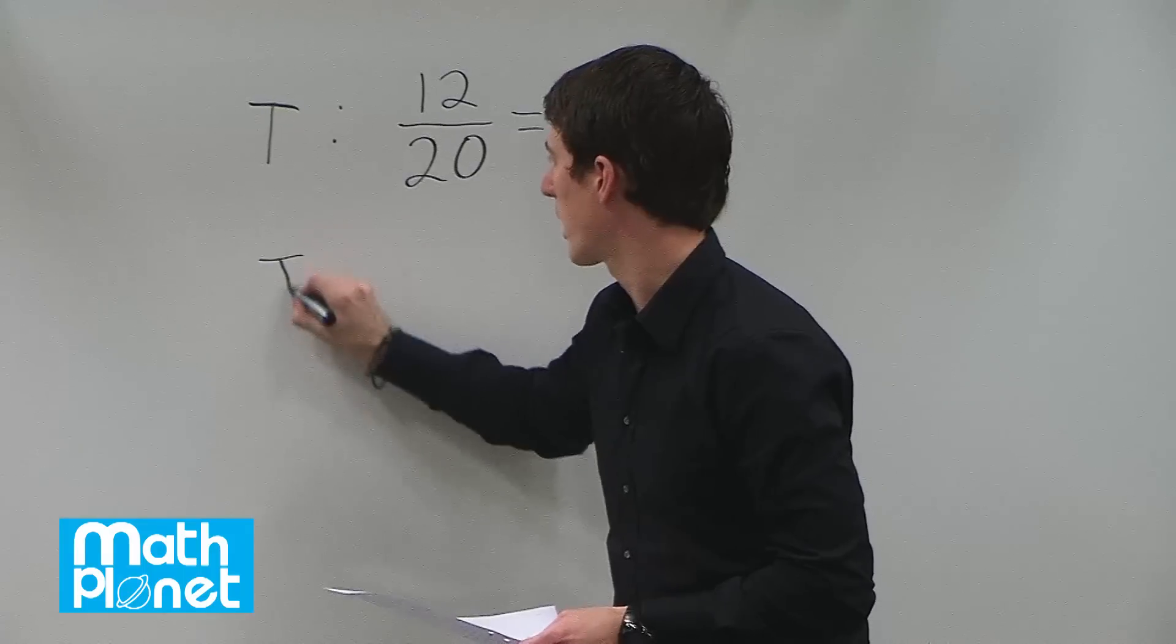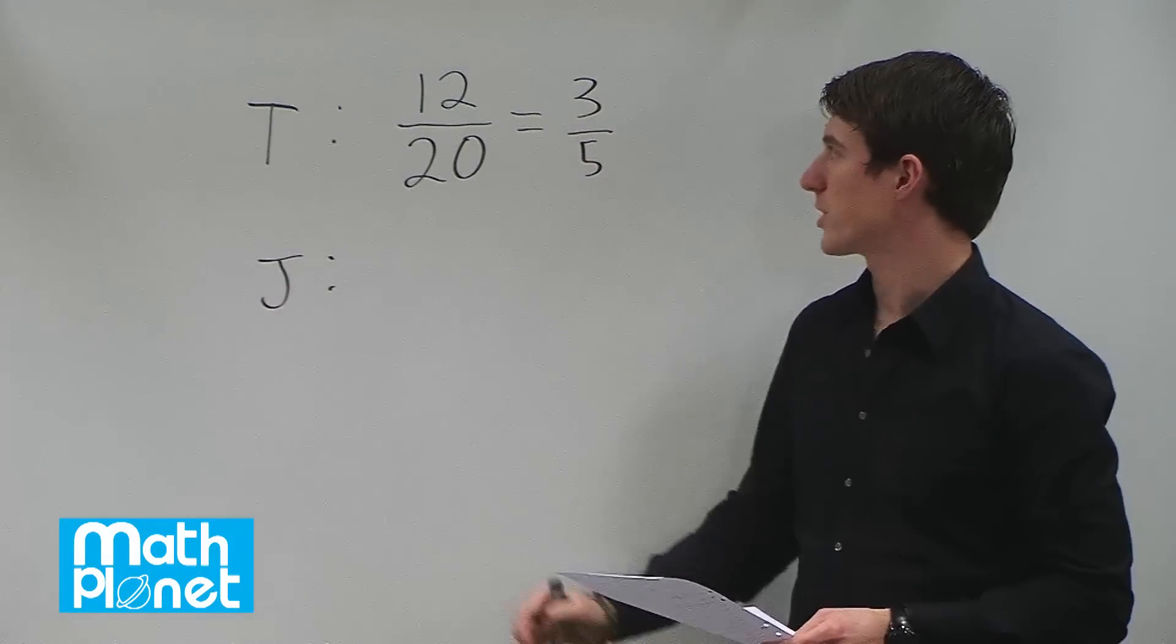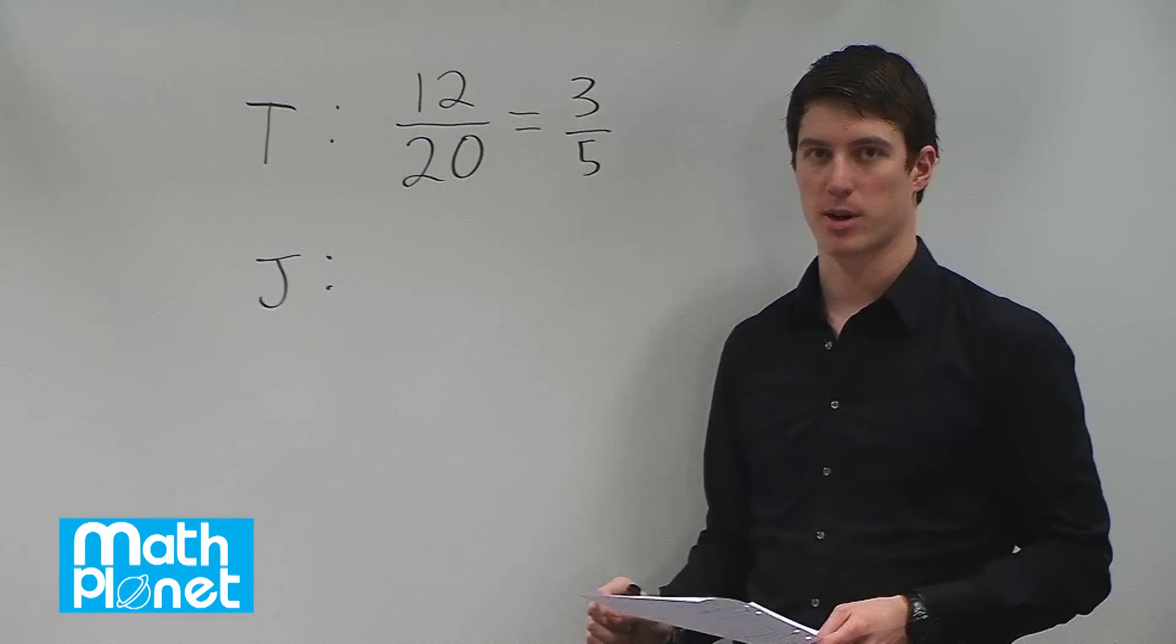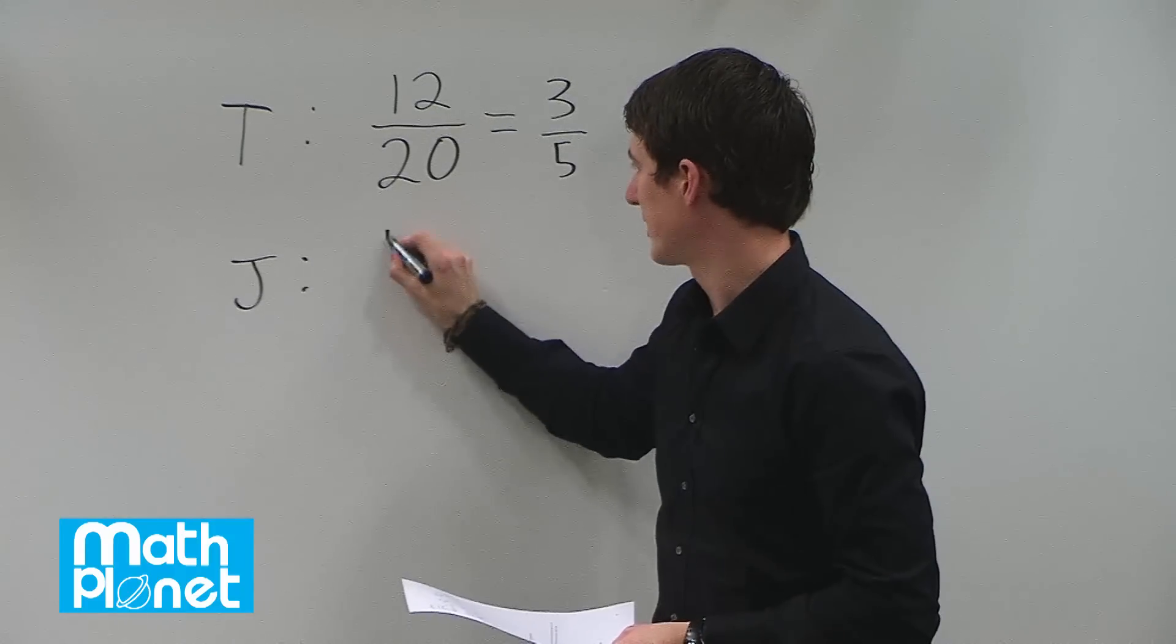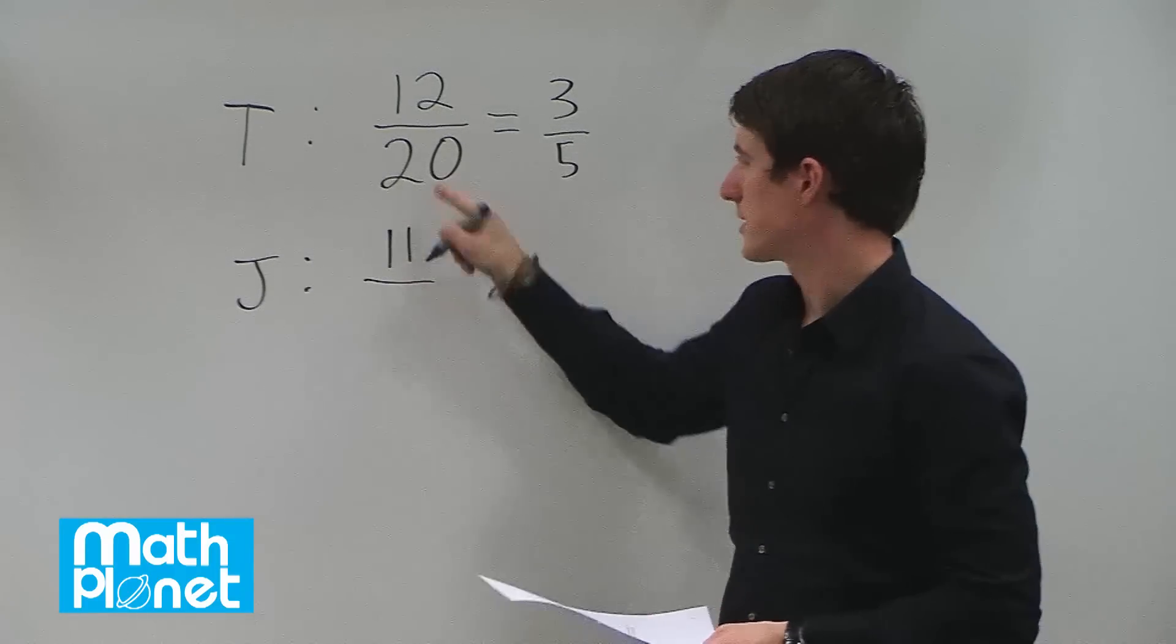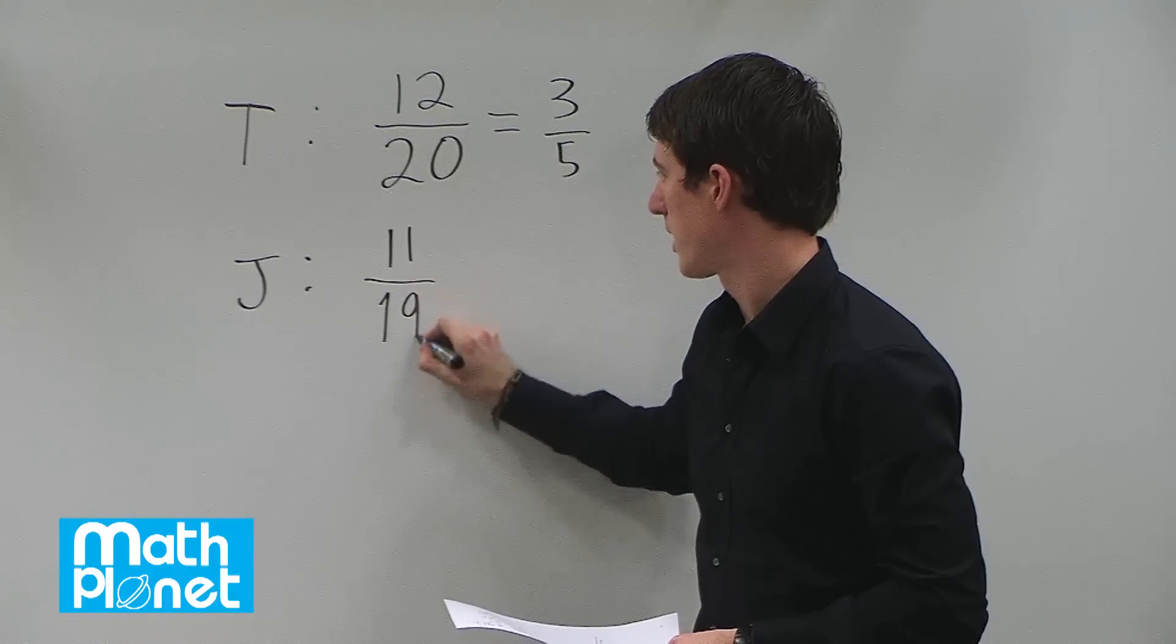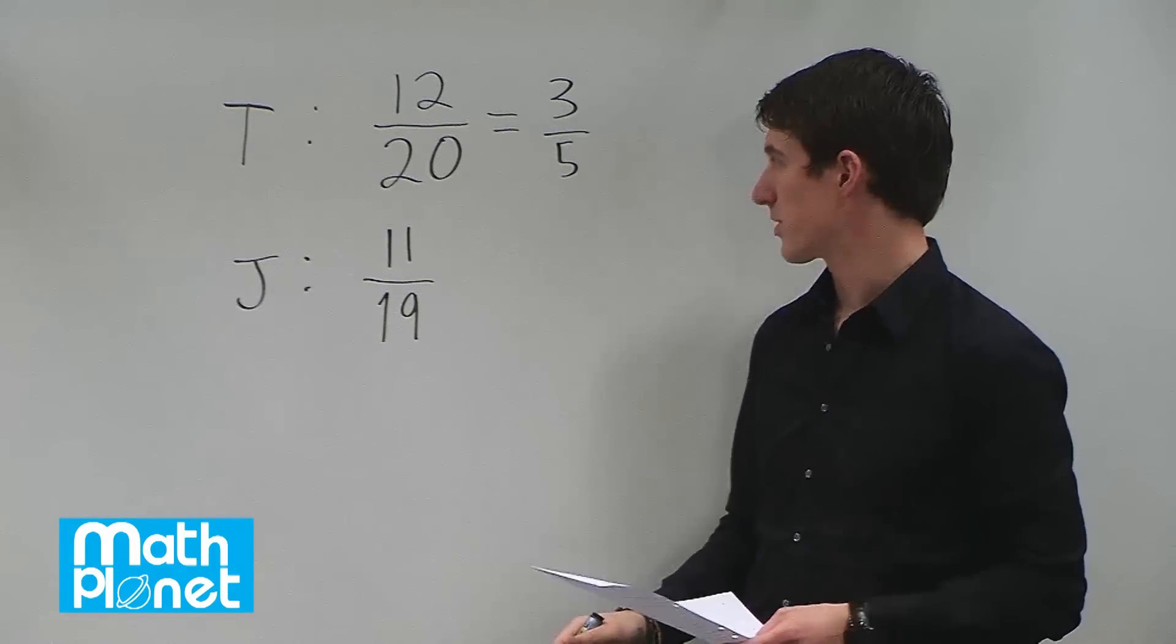The second child is James and when he reaches in, there's one less extra chocolate bar and there's one less bag of candy in general. So there's 11 now and 19 total. And this can't be reduced at all so we just leave it as 11 nineteenths.